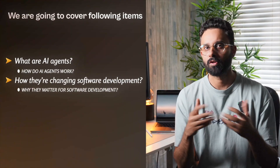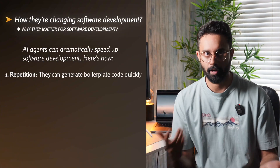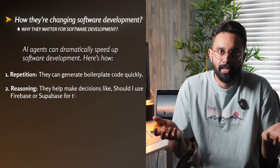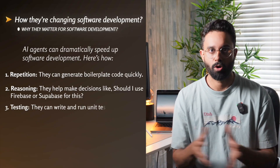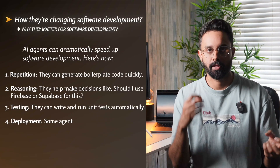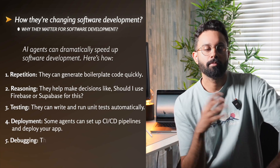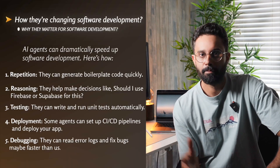Now here's the exciting part — why should you care? AI agents can dramatically speed up the software development process. First, repetition: they can generate boilerplate code quickly. Second, reasoning: they can help make decisions like should I use Firebase or Supabase? In testing, they can write and run unit tests automatically. For deployment, some agents can set up CI/CD pipelines and deploy your app. And for debugging, they can read logs and fix bugs — maybe faster than us.